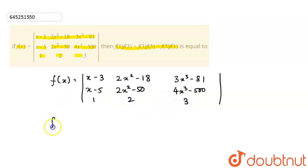So first of all my f of 1, wherever you see x, put 1. So this is going to be 1 minus 3, that is minus 2. 2 into 1 square is 2 minus 18, that becomes minus 16. This is going to be 3 into 1 minus 81, that is going to be minus 78.